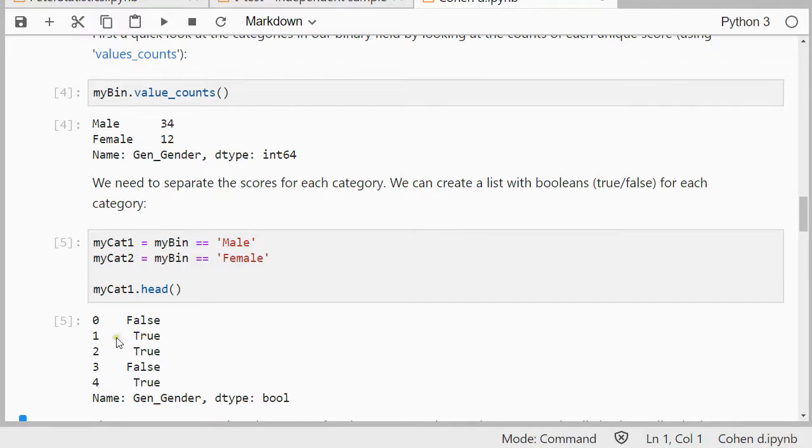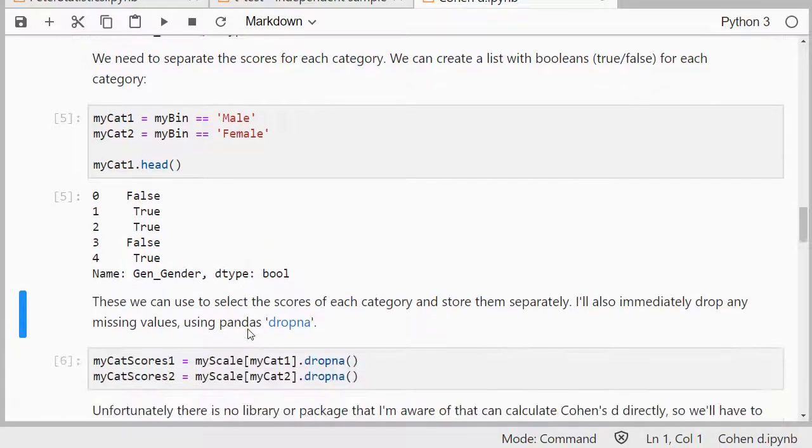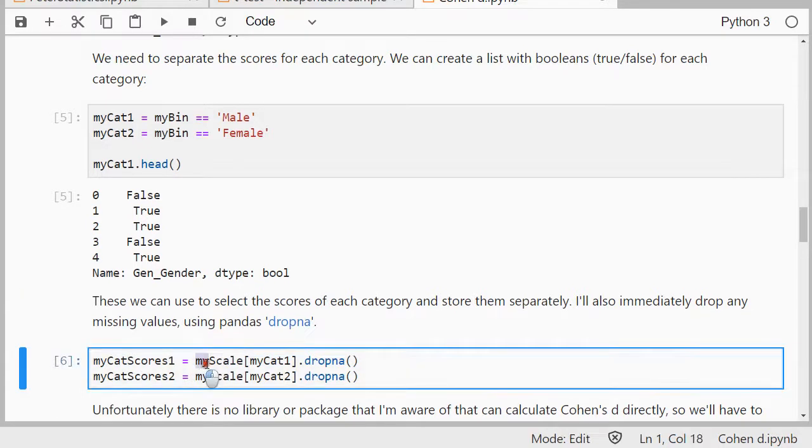The second one, which has record ID 1, had male, so was true. The next one was also male, then was not male, was male, etc. So then we can use that to actually select those scores, so we go for the scale variable, and then if this one is true, then it will go into my cat1, and for the second scores, the females, then it goes into my scores 2.